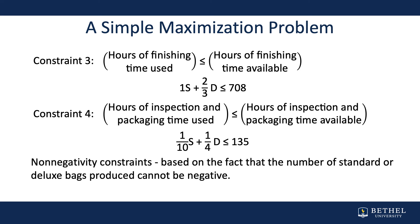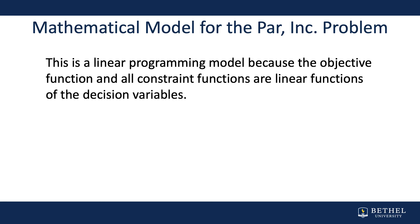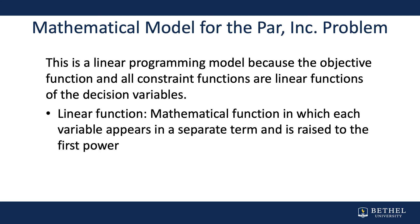We also have non-negativity constraints, based on the fact that the number of standard or deluxe bags produced cannot be negative — we don't produce negative bags. So we must add the constraint that S and D are both greater than zero. Now we have all of the functions needed to solve this problem. This is a linear programming model because the objective function and all constraint functions are linear functions of the decision variables — each variable appears in a separate term and is raised to the first power.